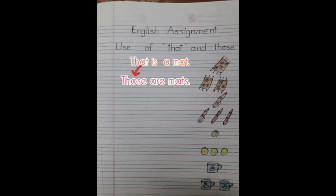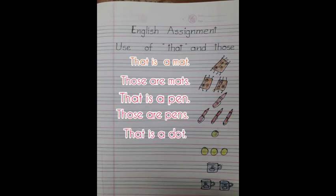Next one. What is that? That is a pen. What are those? Those are pens. What is that? That is a dot. What are those? Those are dots.